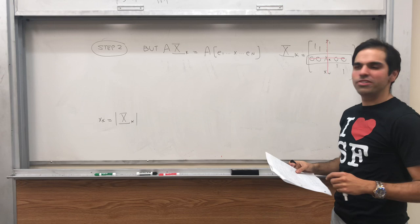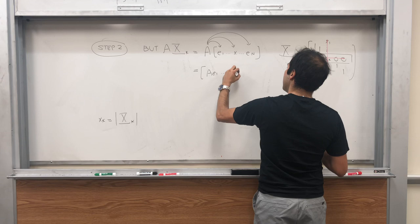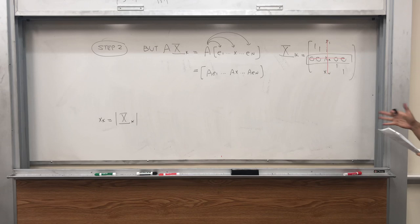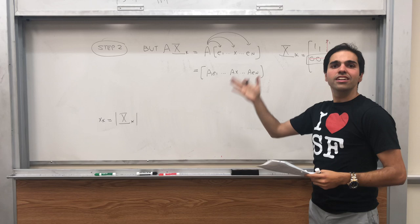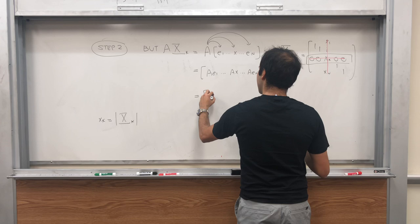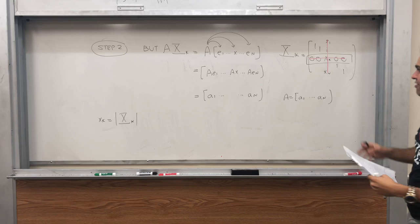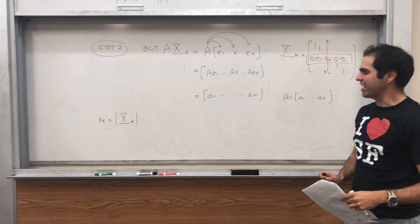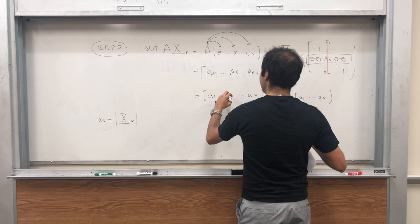And you'll see something very familiar. But A Xk, well that is A of [e1, ..., x, ..., en]. Now remember, matrix multiplication has this very nice distributive property, so we can just distribute A over every vector. So this is [Ae1, ..., Ax, ..., Aen]. And why did we choose the basis vectors? Why did we choose the standard basis? Is because if you evaluate A on each standard basis vector, you just get the column of A. So what this is, is [A1, ..., something, ..., An], where A is [A1, ..., An], which is a very nice way of extracting the jth column of A with those basis vectors.